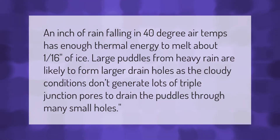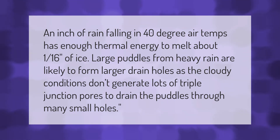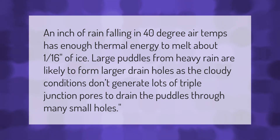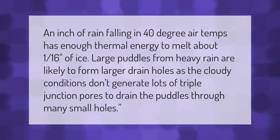An inch of rain falling in 40 degree air temps has enough thermal energy to melt about 1/16th of ice. Large puddles from heavy rain are likely to form larger drain holes, as the cloudy conditions don't generate lots of triple junction pores to drain the puddles through many small holes.